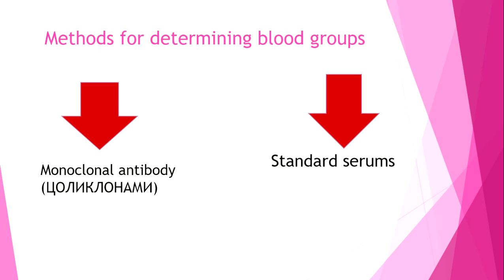We have two major methods for determining blood groups by the ABO system. First, monoclonal antibodies — in Russian called solyoclons. It is easy to do, fast, and highly reliable. The second method is standard serums, which is not as easy to do and has a somewhat higher percent of false reactions compared to monoclonal antibodies. There is also a third method using standard erythrocytes, but that is performed only in the laboratory.